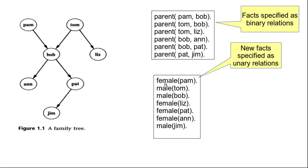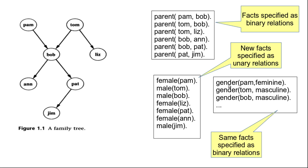In that approach we have two different relations: one is 'female' and the other is 'male' — these are unary relations. Instead, we can use only one relation named 'gender' as a binary relation. So we say gender(Pam, feminine) and gender(Tom, masculine) and so on. Here we have only one relation 'gender', not two separate relations male and female, but it is a binary relation. Either way, to capture gender information we add new facts to our program.